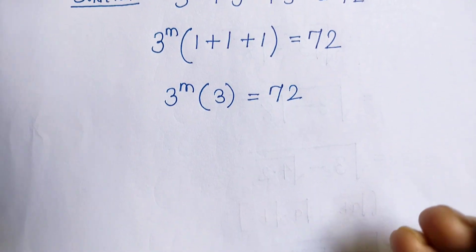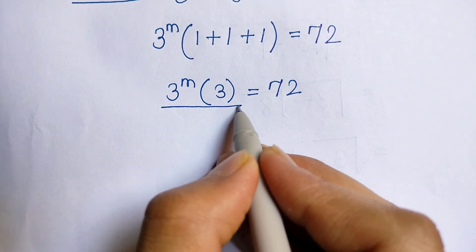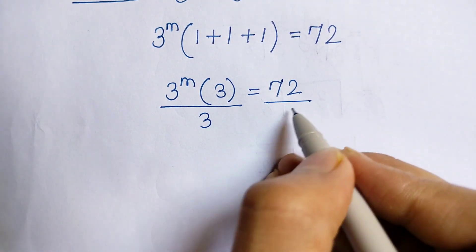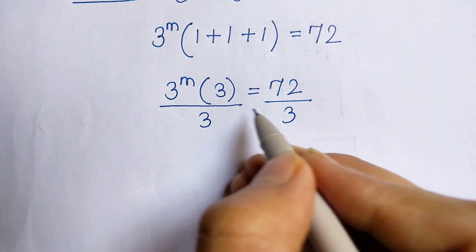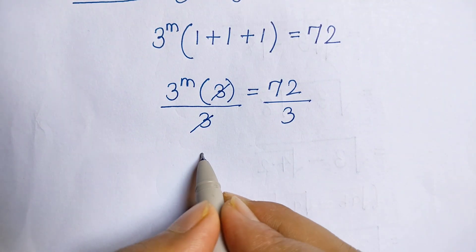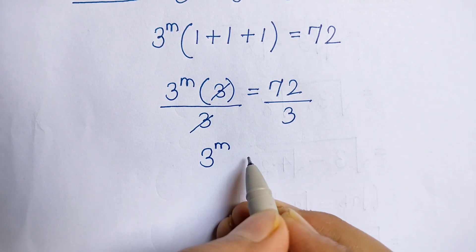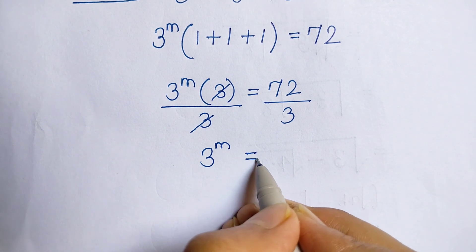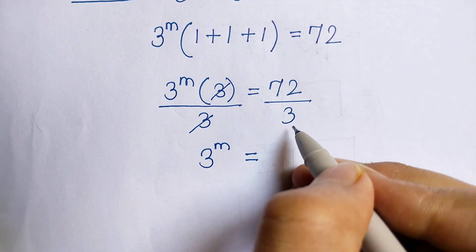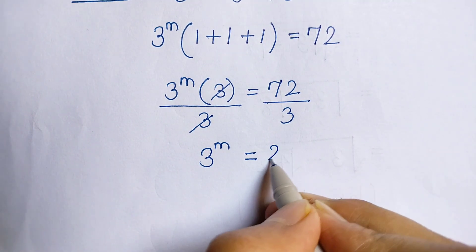Now we divide both sides by 3. The 3s cancel, giving us 3 to the power m is equal to 72 divided by 3, which is 24.